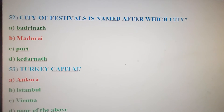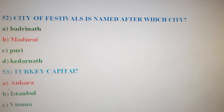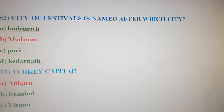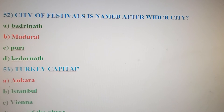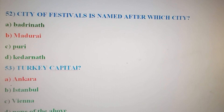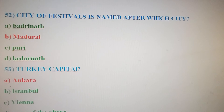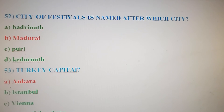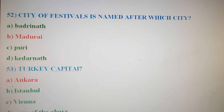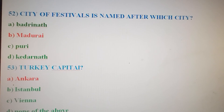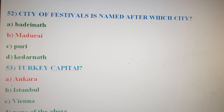Next question: 'City of Festivals' is a name given to which city? Option A: Badrinath. Option B: Madurai. Option C: Puri. Option D: Kedarnath. The correct answer is Option B, Madurai.